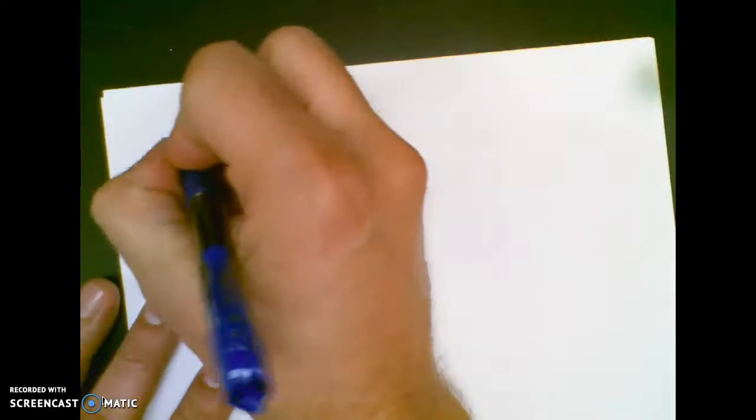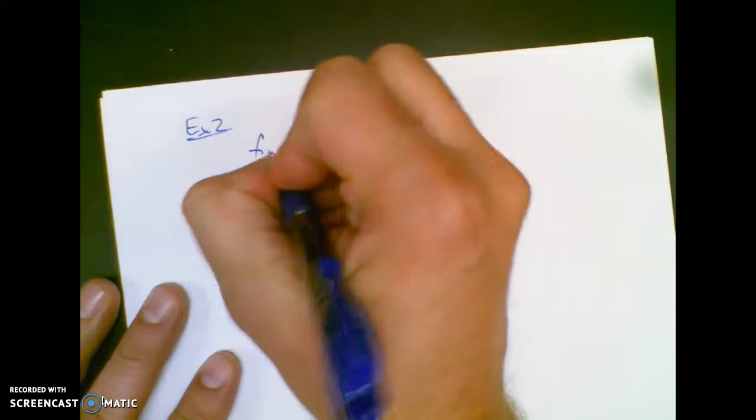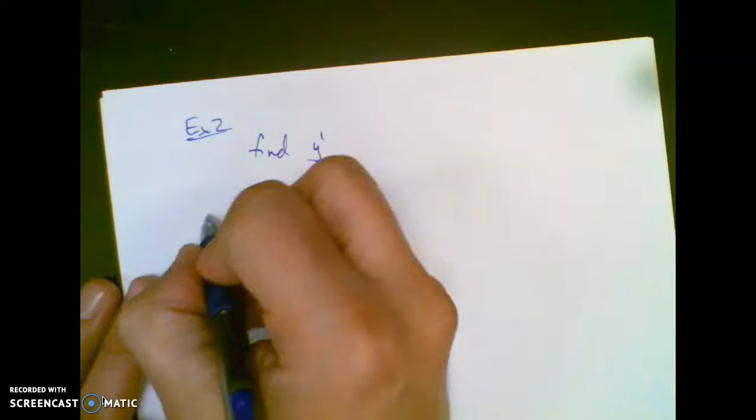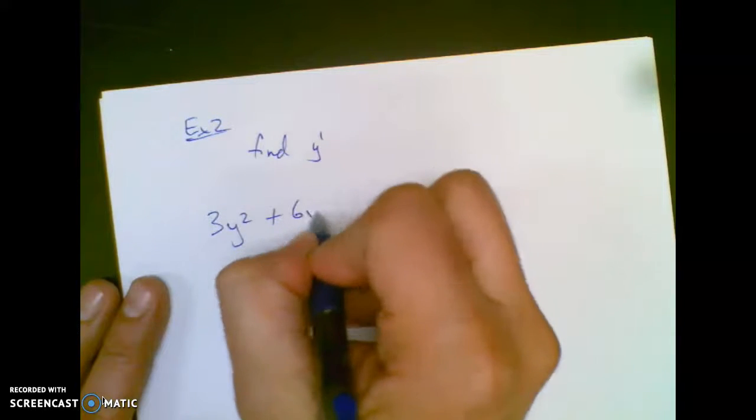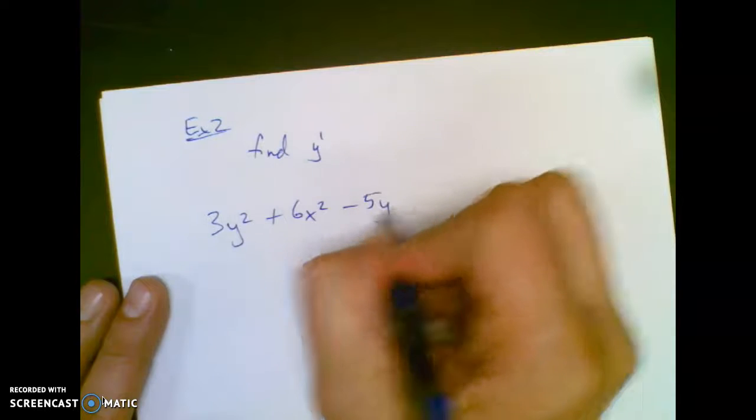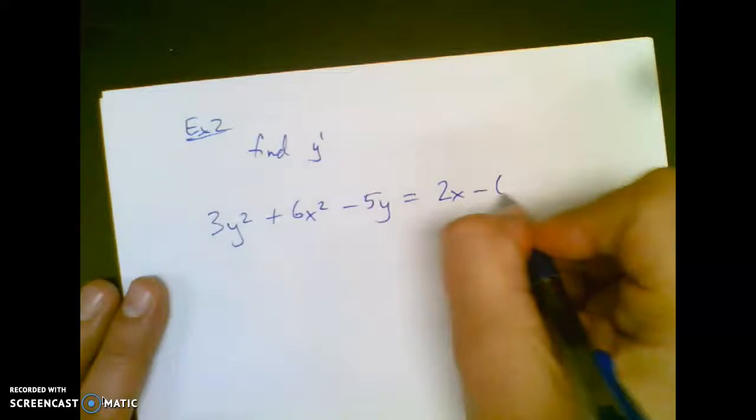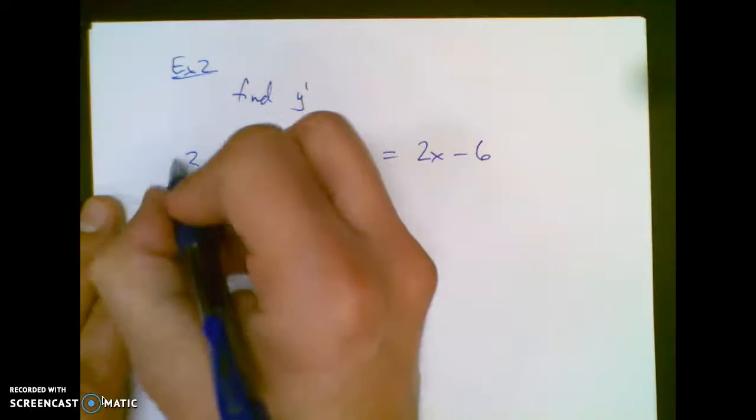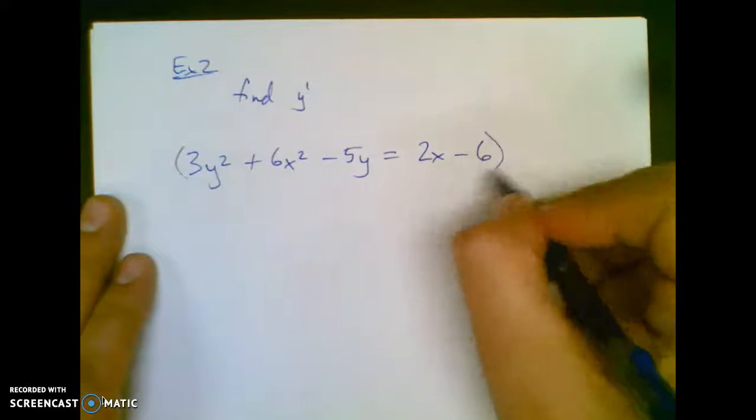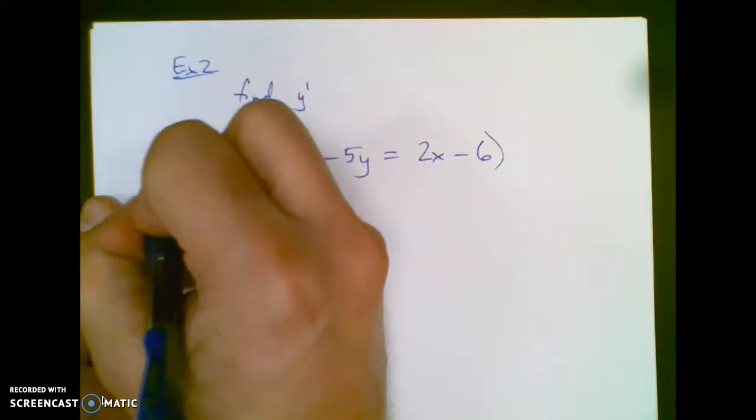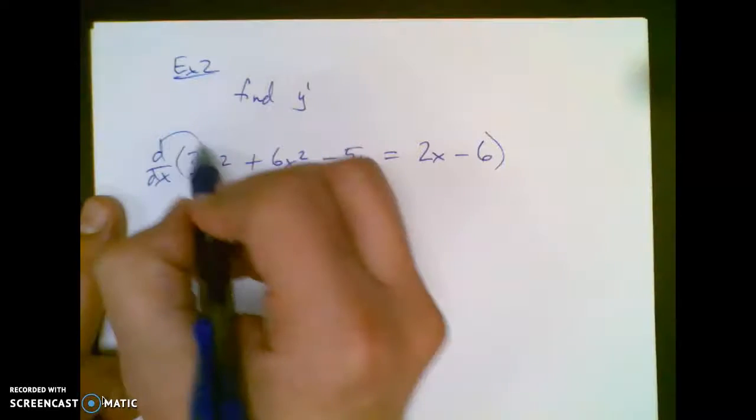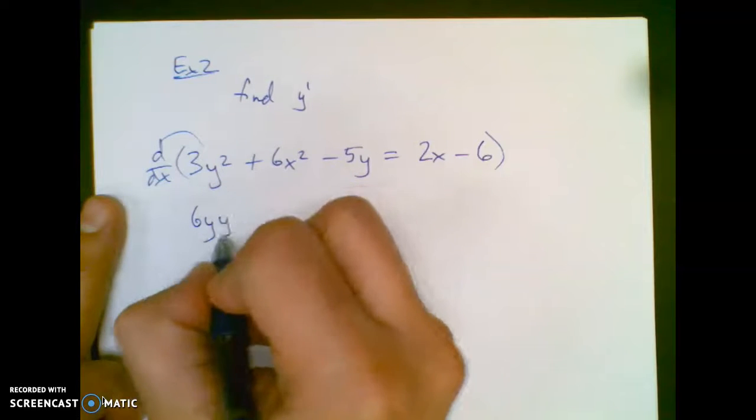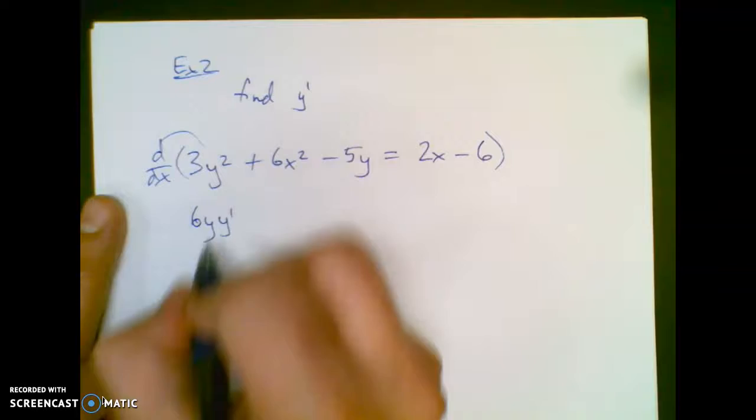Okay. So this is find y prime. That's your directions. And here's your equation: 3y² + 6x² - 5y = 2x - 6. Looks like a monster of a problem, right? Not anymore. Not now that you know implicit differentiation. I'm going to differentiate with respect to x. So I'll have 6y, and I've got to pay the penalty. Because it could be a function in there.